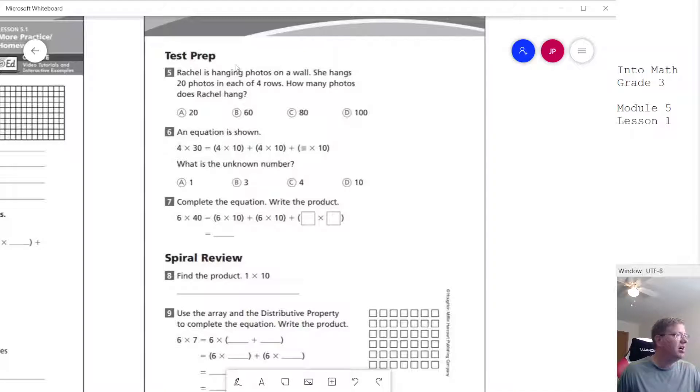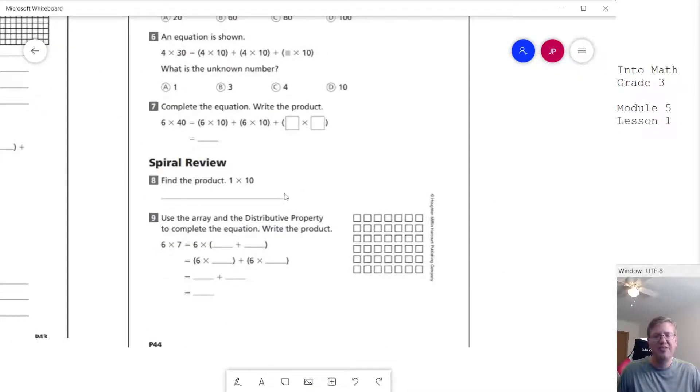All right. So for each of these, we can use what we've worked on before. We want to do 20 photos with four rows. We can draw a picture to help us with that. We want to figure out what our missing number is here. So keep in mind what I've talked about earlier in the video. And then the same thing for this, we're doing something similar. Now, again, like I mentioned on that one example, if we have 10 and 10 and we're trying to get up to 40, we might need to do something different than 10.